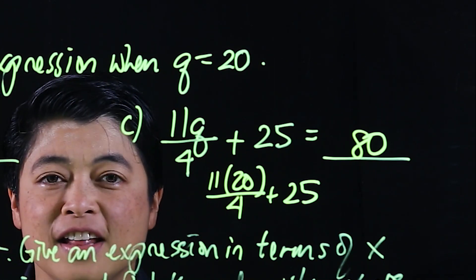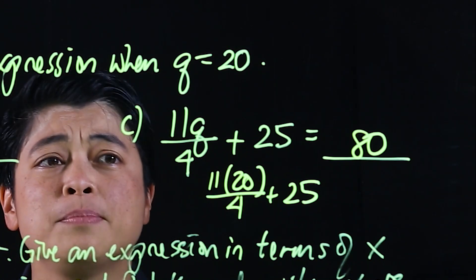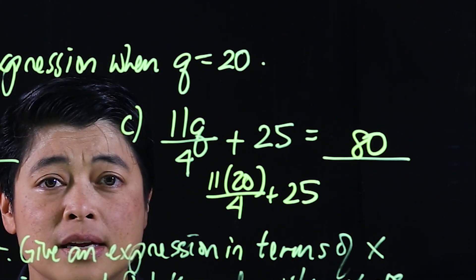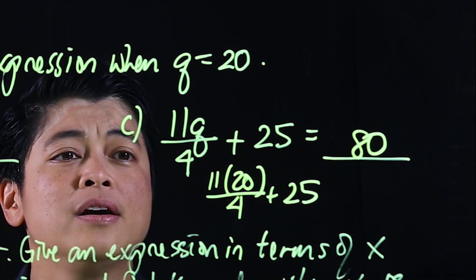But if we're using the calculator, then the calculator will just simplify. So we just type up 11 times 20 and then divide by 4.